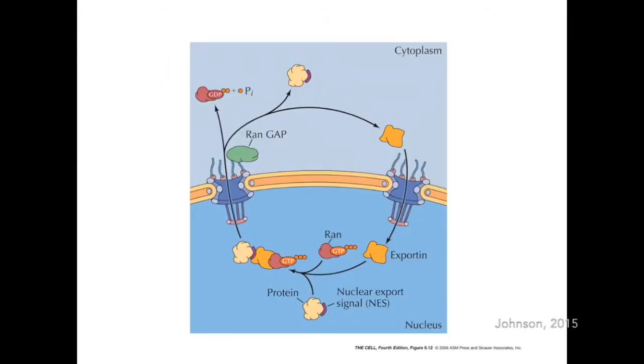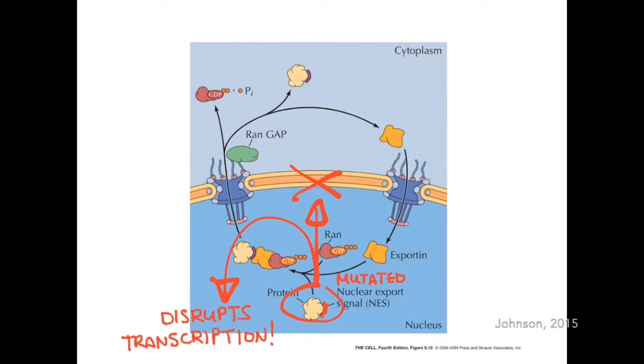Because mutant Huntington contains a mutated nuclear export signal, the N-terminus Huntington fragments are trapped inside the nucleus, disrupting transcription of other proteins and other nuclear functions.